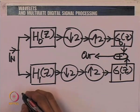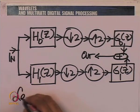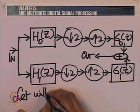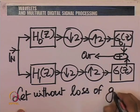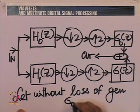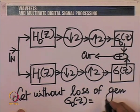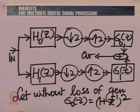Without loss of generality, we shall choose G_0(z) equal to (1 + z^{-1})^2. Before I proceed, an important remark: we could have as well chosen H_0(z) to be (1 + z^{-1})^2. An important question we must answer is: if I interchange the analysis and the synthesis side, what difference does it make?